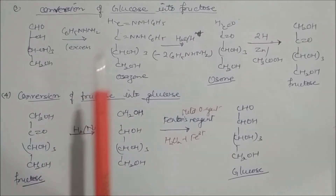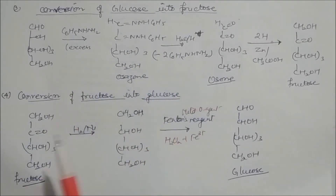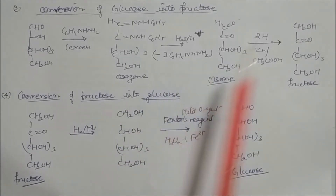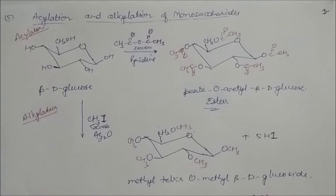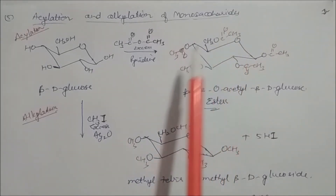So we have covered four interconversions: pentose to hexose (Kiliani-Fischer), hexose to pentose (Ruff/Wohl degradation), glucose to fructose, and fructose to glucose. These four conversions are very important. Next we will see acylation and alkylation reactions of monosaccharides.